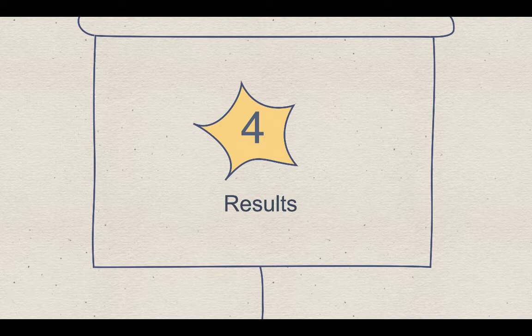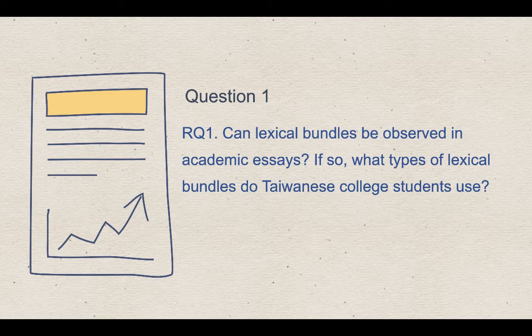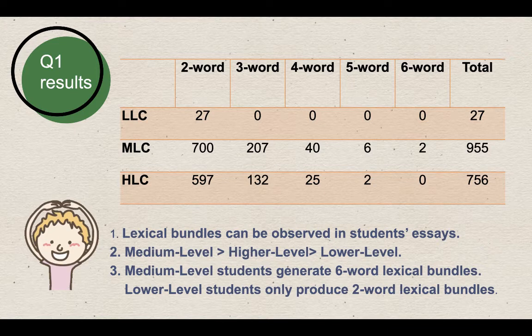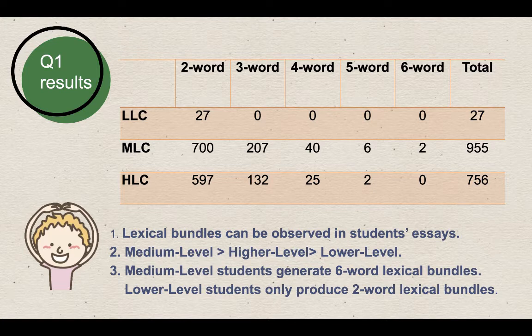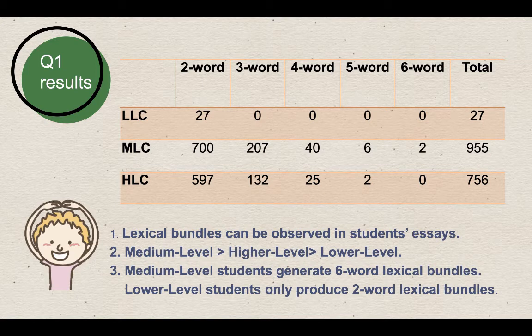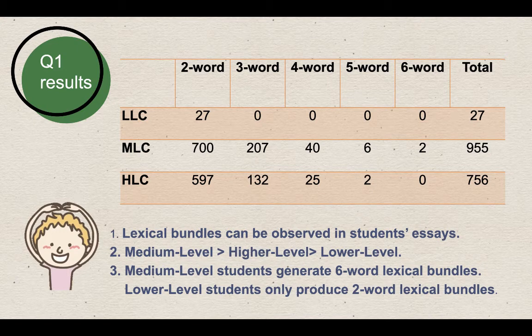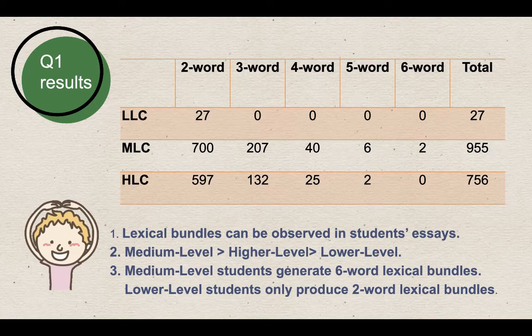Now let us turn to the results of each research question. The first question: Can Lexical Bundles be observed in academic essays? If so, what types of Lexical Bundles do Taiwanese college students use? This slide presents the descriptive statistics. As you can see, among all three groups of students, they all use Lexical Bundles in their essays. So, Lexical Bundles were observable in students' essays. Median-level students use more bundles, including six-word Lexical Bundles. On the other hand, lower-level students only use two-word Lexical Bundles in their essays.